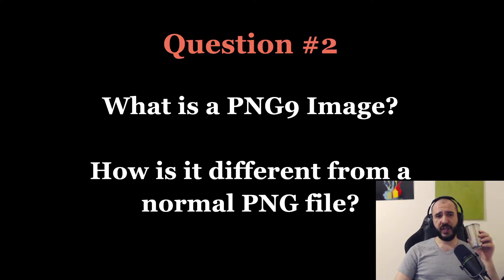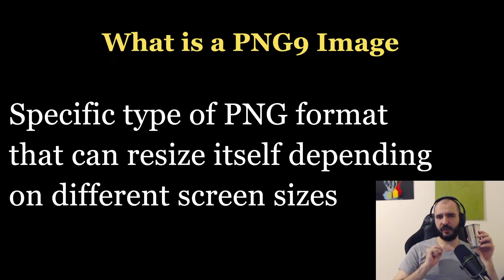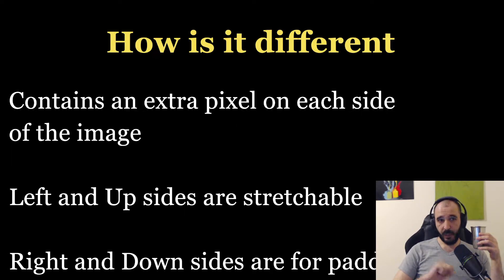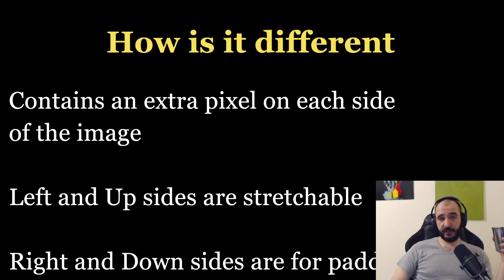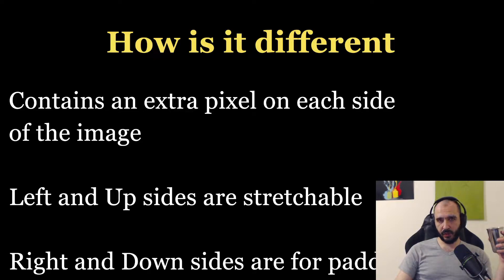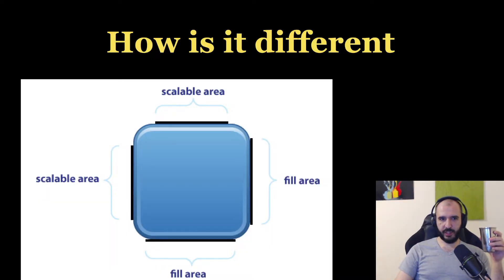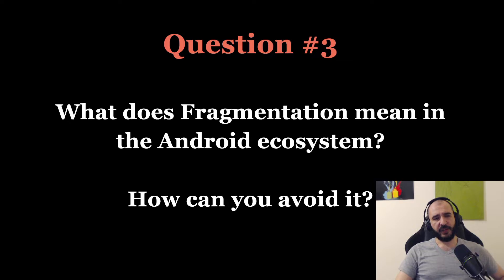What is a PNG 9-image, or 9-patch, and how is it different from a normal PNG file? It's a specific type of PNG format that can resize itself depending on screen size. It contains an extra pixel on each side of the image. The left and top sides are stretchable — that's where the image uses the pixel to stretch itself. The right and bottom sides are for padding. This is how it looks: you have your scalable areas and the filler area.